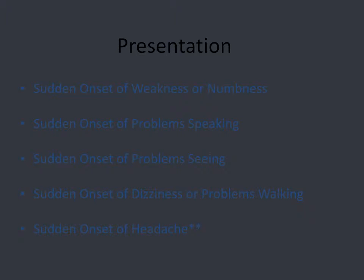This slide lists the American Heart Association's stroke warning signs for patients: focal neurologic deficits such as numbness or tingling on one side of the body, aphasia, visual deficits, and dizziness. It's important to point out that ischemic strokes don't typically cause headaches, though clots — particularly in the posterior circulation or dissections — can. Sudden onset headache on this slide mainly refers to the worst headache of your life, to catch subarachnoid hemorrhages.